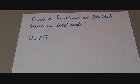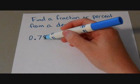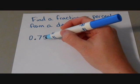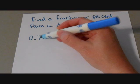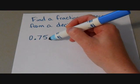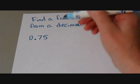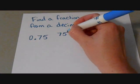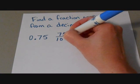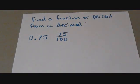So first let's start with the fraction. We know that this decimal is out of the hundredths. When we read this number, we can read it as 75 hundredths. So we can actually just write it like that, 75 one hundredths. So right there it's already in fraction form.